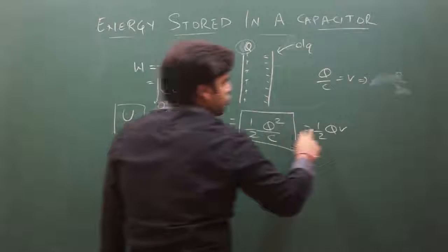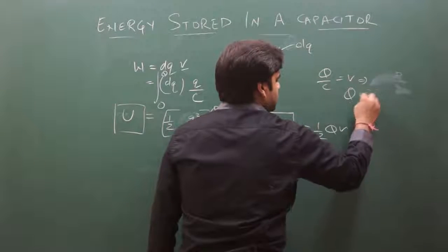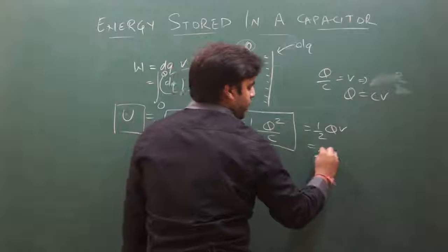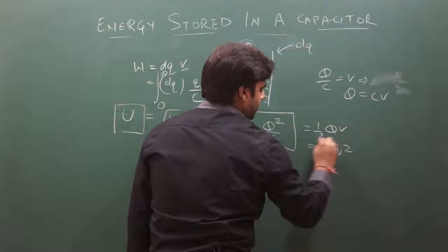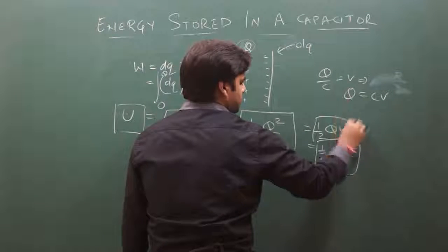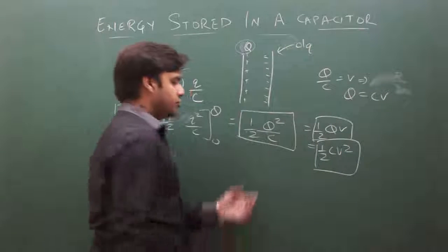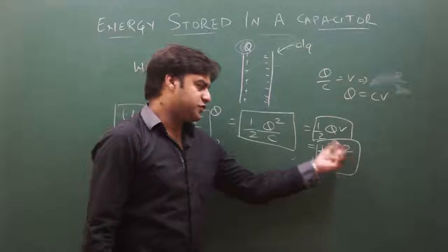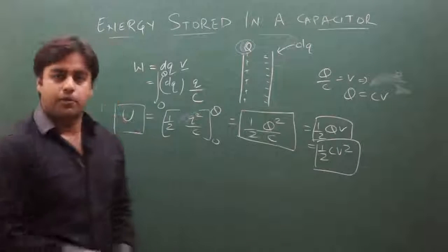Similarly, substituting Q equals C times V, we get U equals half CV squared. So the energy stored can be expressed in three equivalent forms: half Q squared by C, half CV squared, or half Q times V.